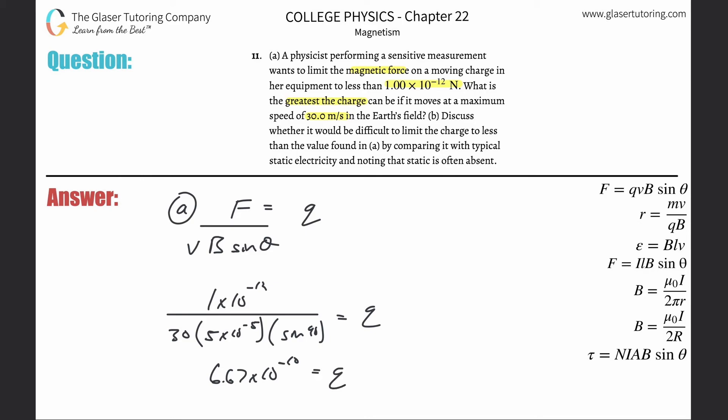And then this comes out to be about 6.67 times 10 to the minus 10th. Okay. And that's going to be in terms of Coulombs because that's how charge is measured. Those are the units. So that's basically the greatest charge.